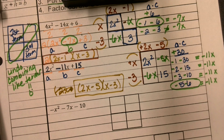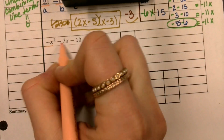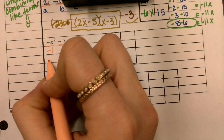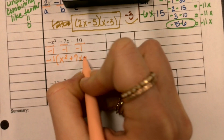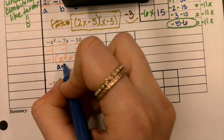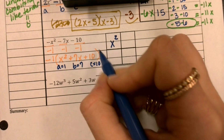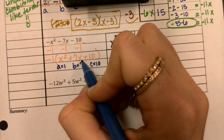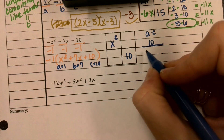Always look for a GCF. I don't see one here, but I have a leading coefficient that's negative, so we always want our a to be positive — I'm going to divide out a negative 1. That gives me x² + 7x + 10 — just change all the signs. Now my a is 1, my b is 7, my c is 10. I put my first term in the upper left box and my third term in the lower right.